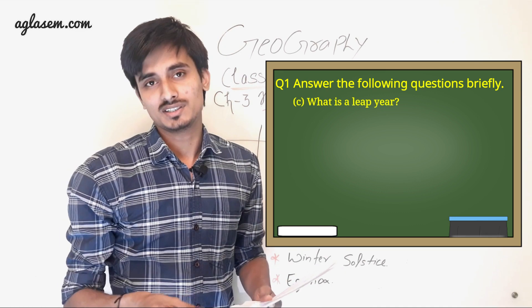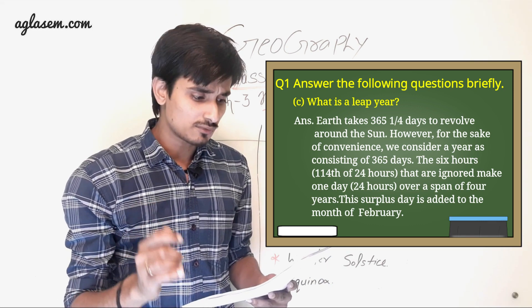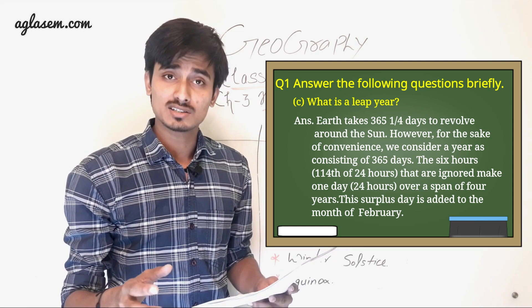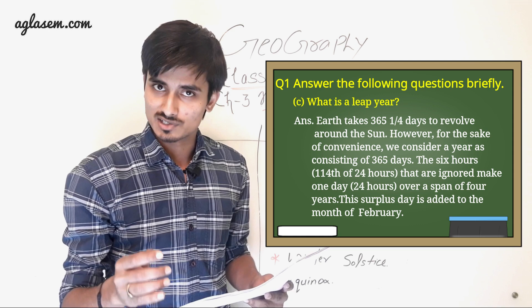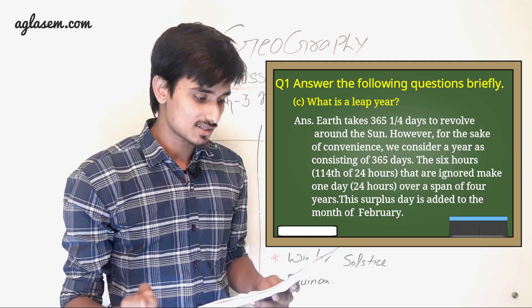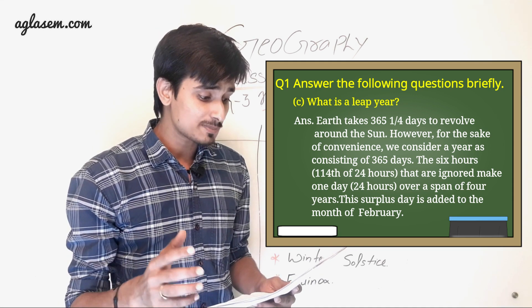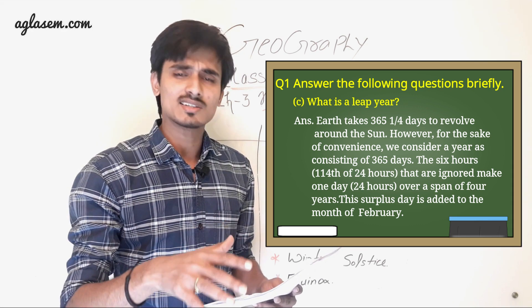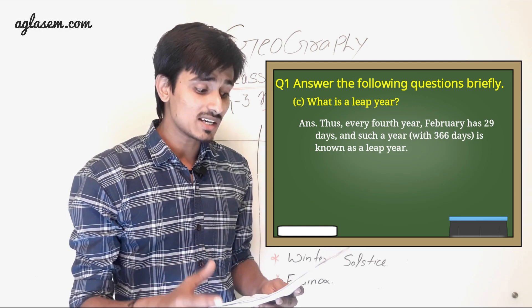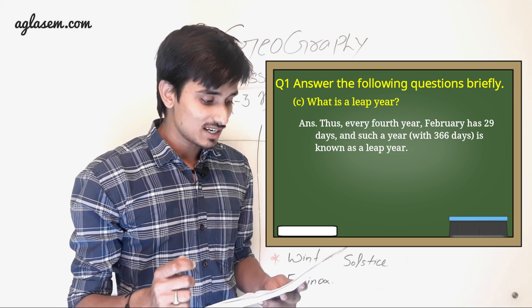C. What is a leap year? So answer is: Earth takes 365 and 1 by 4 days to revolve around the Sun. However, for the sake of convenience, we consider a year as consisting of 365 days. The 6 hours that is 1/4th of 24 hours that are ignored make 1 day 24 hours over a span of 4 years. This surplus day is added to the month of February. Thus, every 4th year, February has 29 days and such a year with 366 days is known as a leap year.